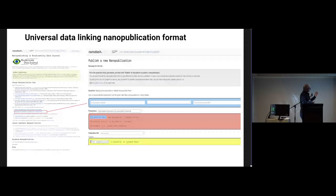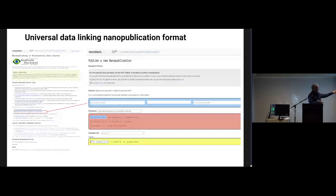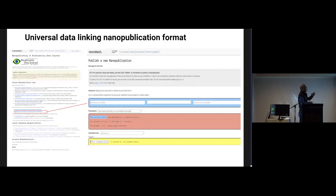There are also more generic templates, like the Universal Data Linking nanopublication format, which is available alongside the biodiversity nanopublications. It states that resource A is linked to resource B — is the same as, or is similar to — using ontology terms for relations. These can be applied to any digital entities on both sides. For example, you can say that accession number of gene sequence A has been extracted from organism ID B.